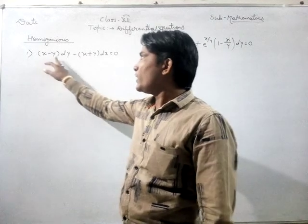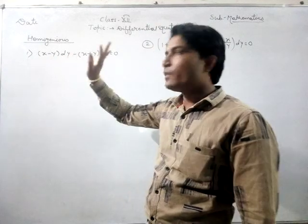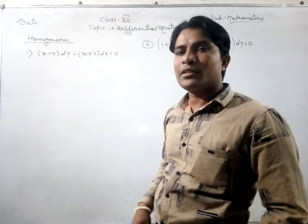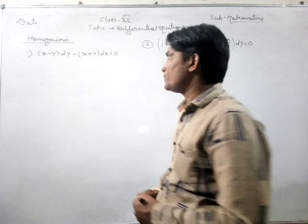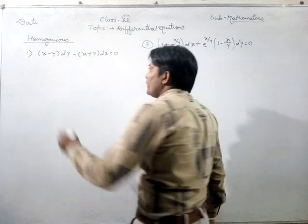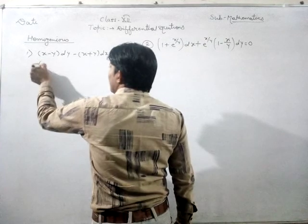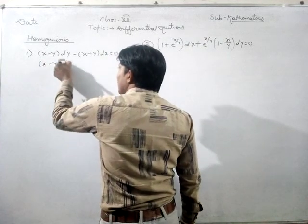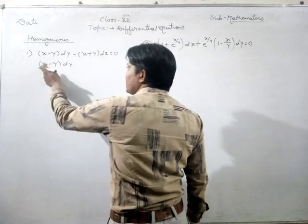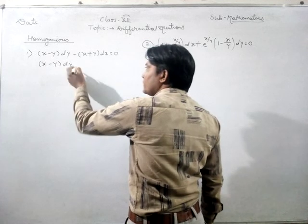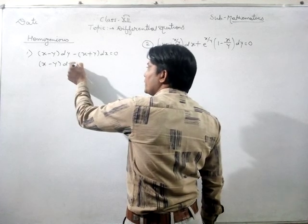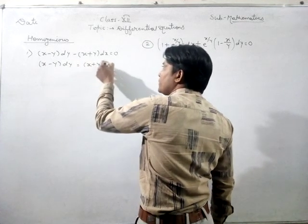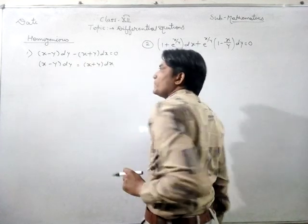In the first question: (x minus y) dy minus (x plus y) dx equals 0. If we convert this into a homogeneous function, then it will be (x minus y) dy equals (x plus y) dx.